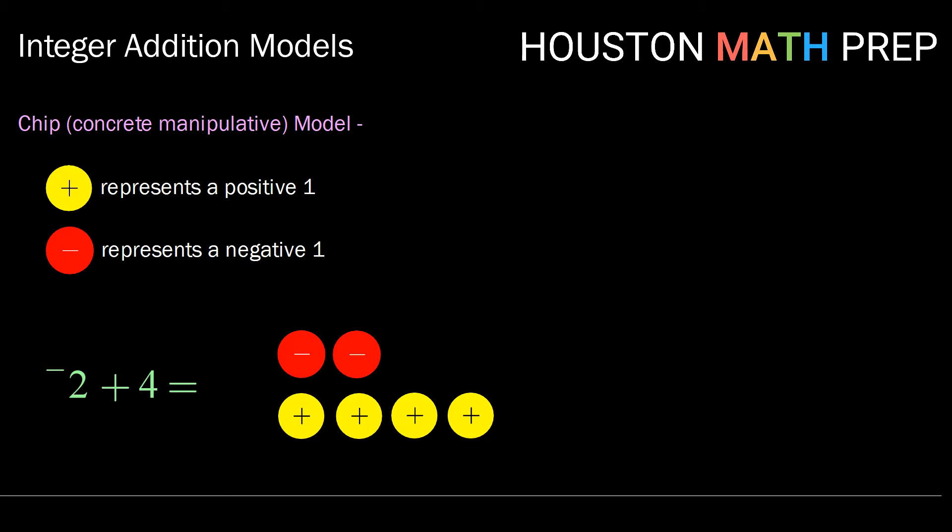Here remember with our chips, any group of one red and one yellow equal to zero. So we can group those by either stacking them or even removing them and count what is left over.